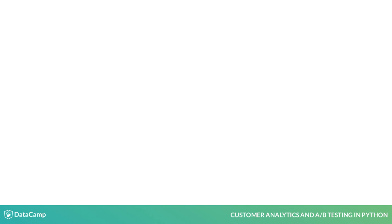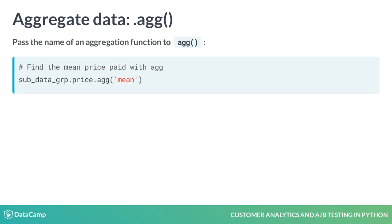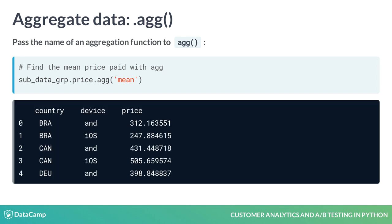Any built-in function similar to mean can be called on a DataFrameGroupBy object. However, more flexible options exist through use of the Agg method. The easiest way to use this method is to pass a function like mean to it. As we can see, this has the same impact as when we called mean directly.